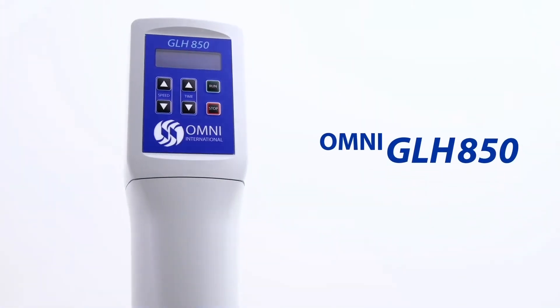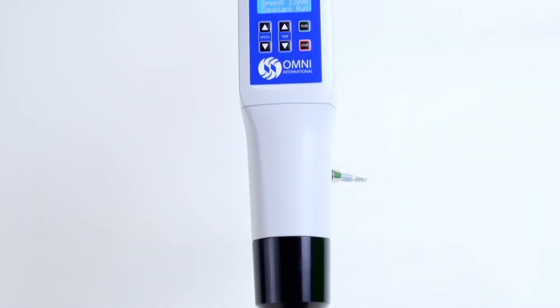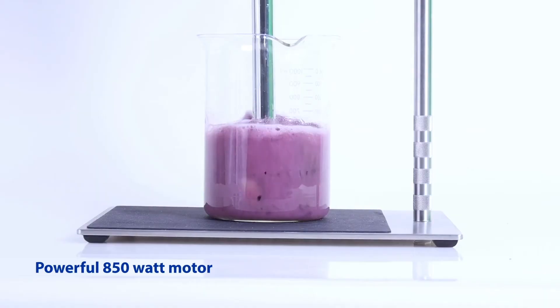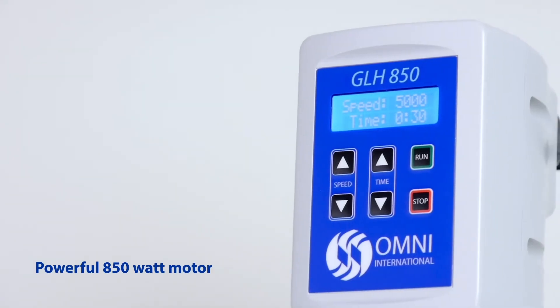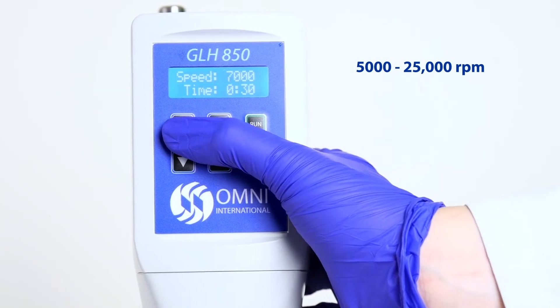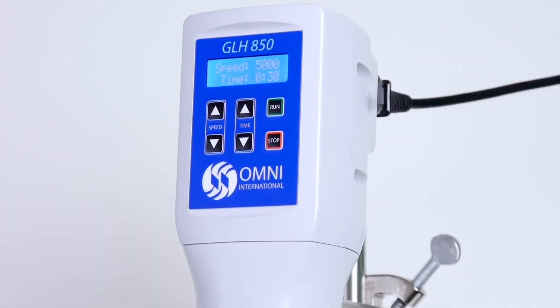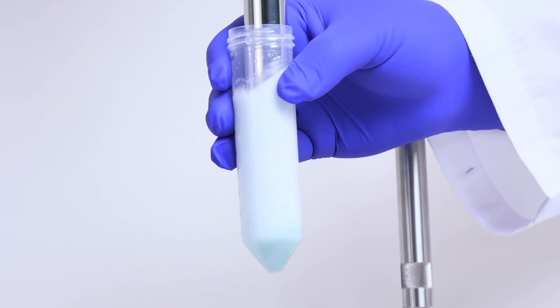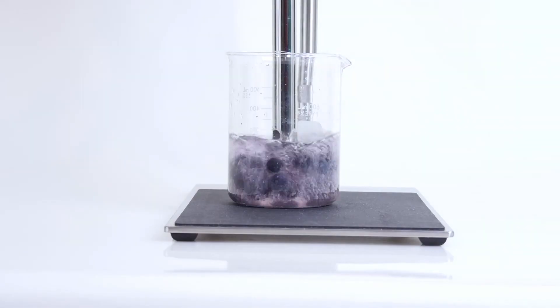The Omni GLH 850 offers the ultimate performance with a powerful 850 watt motor and digital speed controls ranging from 5,000 to 25,000 rpm. It is capable of processing at smaller lab-scale quantities, or at larger production scale quantities, up to 10 liters in volume.